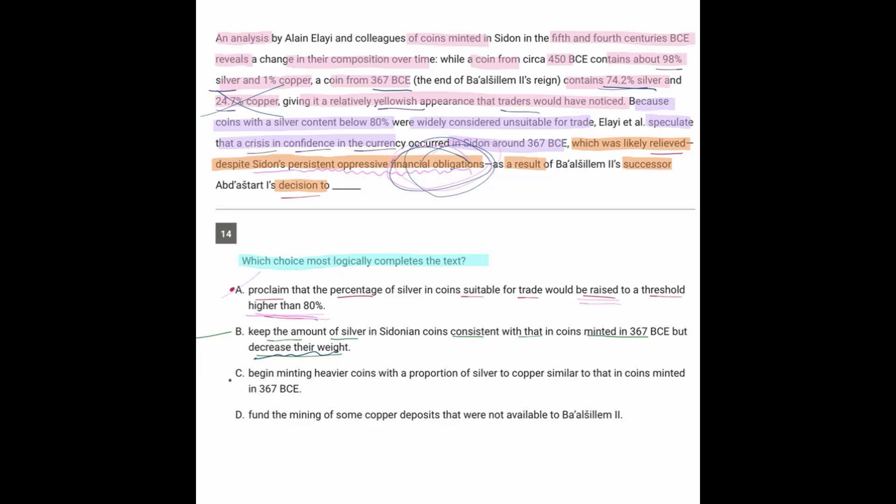Looking at C, the decision was to begin minting heavier coins with a proportion of silver to copper similar to 367 BC. Well, 367 BC is where there was this crisis. There was this crisis in confidence. So if the proportion is going to be similar, that's not going to fix the problem at all. So we can easily get rid of C.